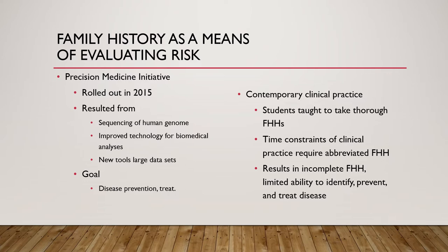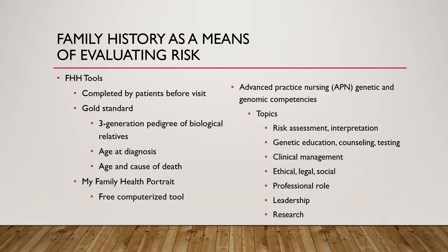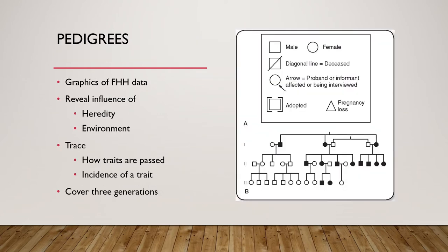Taking a thorough family health history is important. Yes, time constraints are significant — you may be seeing three to four patients an hour — but an incomplete family health history can be detrimental because you might not identify critical issues. Looking at that three-generation history: mom, dad, brother, sister, and then maternal and paternal grandparents. There are many tools to help with risk assessment, education, and patient management. Understanding genotypes, how traits are passed, and incidence helps you understand the pedigree for that family.